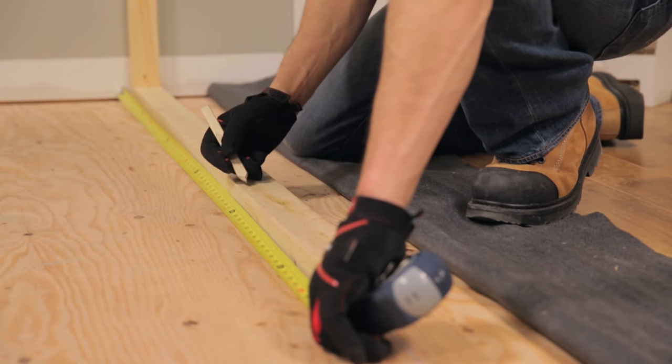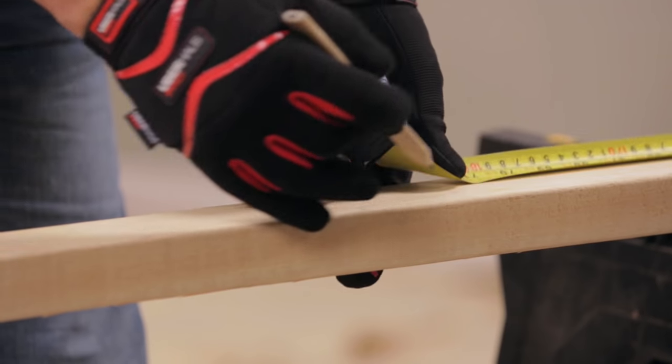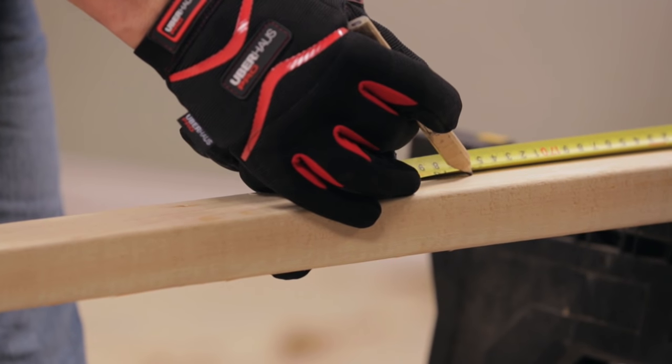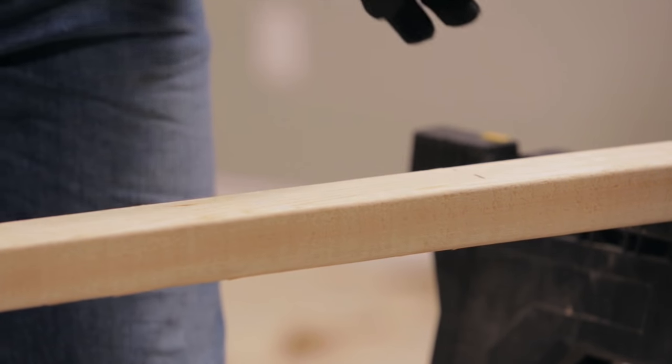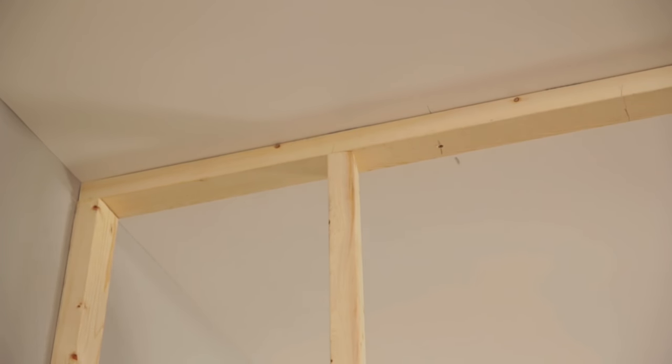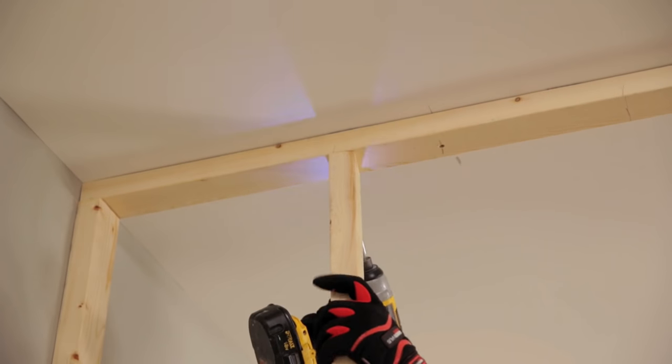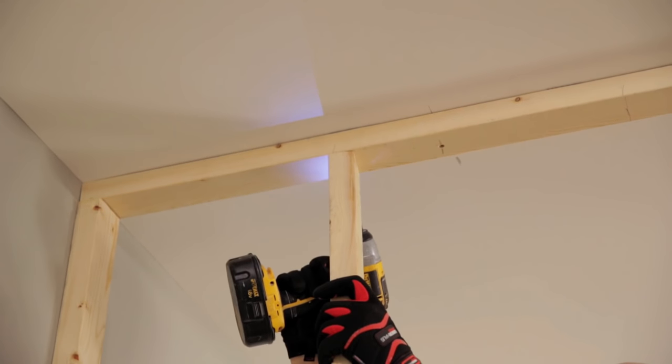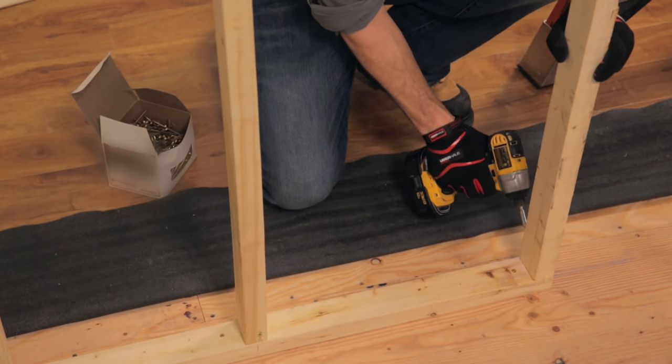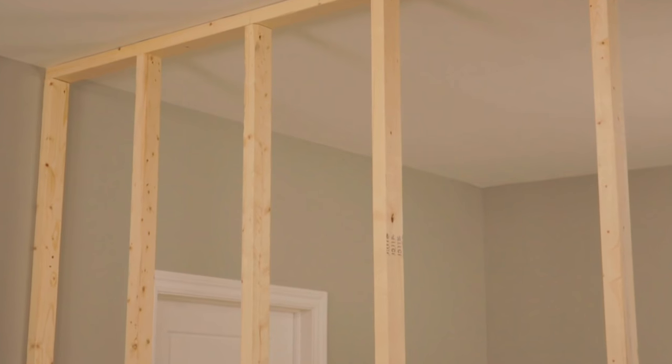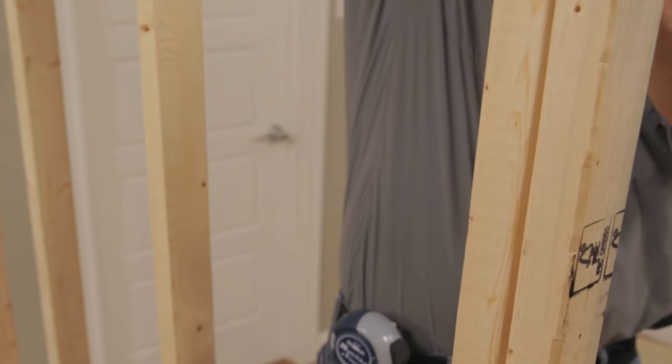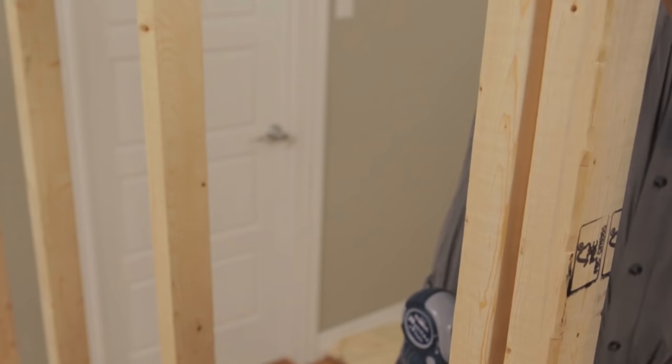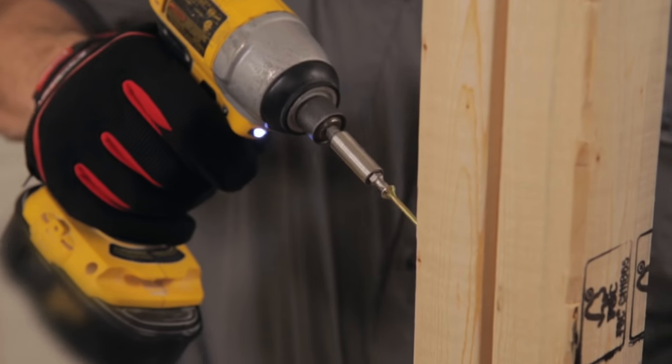Mark the two plates every 16 inches. Measure the distance between the plates on the first mark and cut the second stud. Place the stud on the marks made on both plates, then screw it. Repeat for the remaining studs. After, solidify the edge of the wall by screwing a second stud against the last stud from the inside.